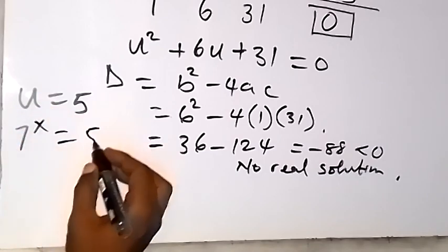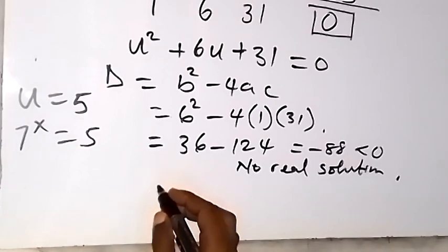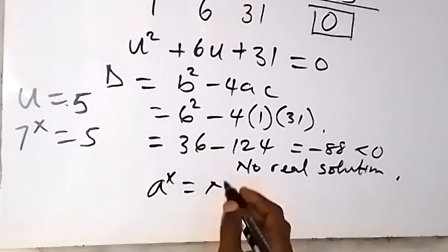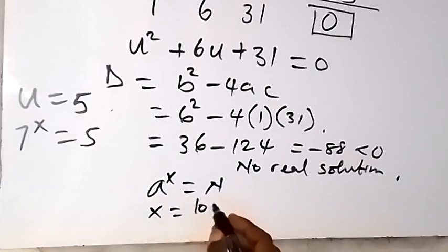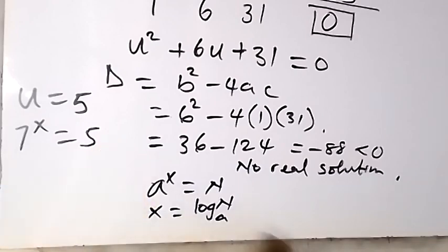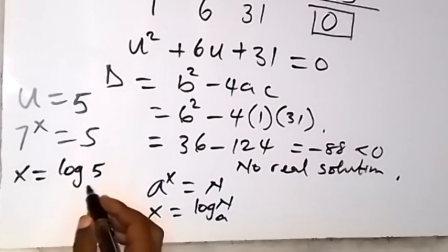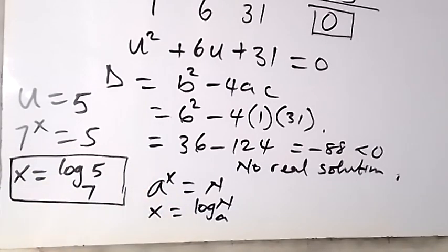We can get x from here. This is an index form, so we can write it in logarithm form. From the general form, when we have a raised to power x equals n, we can change it to x equals log n base a. So x equals log 5 base 7. Here we have the value of x.